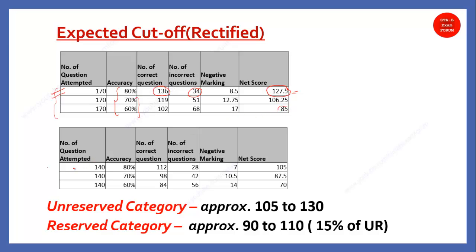Coming to the majority of students — the mean number of questions attempted — if accuracy is 80%, the overall net score will be 105. So if you take the bound of these two scenarios it comes to approximately 105 to 130. For the lower bound it comes to 70 to 85.